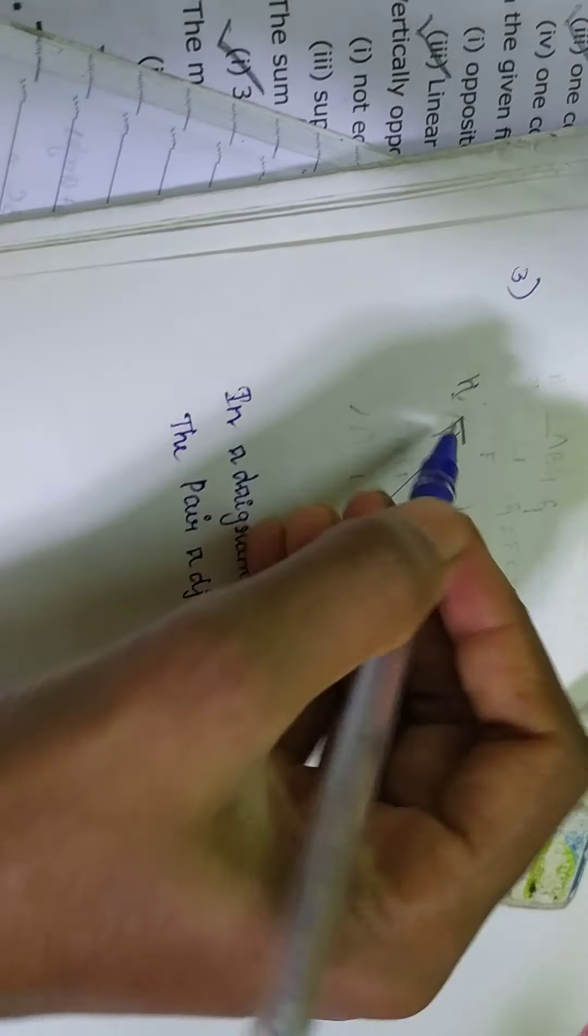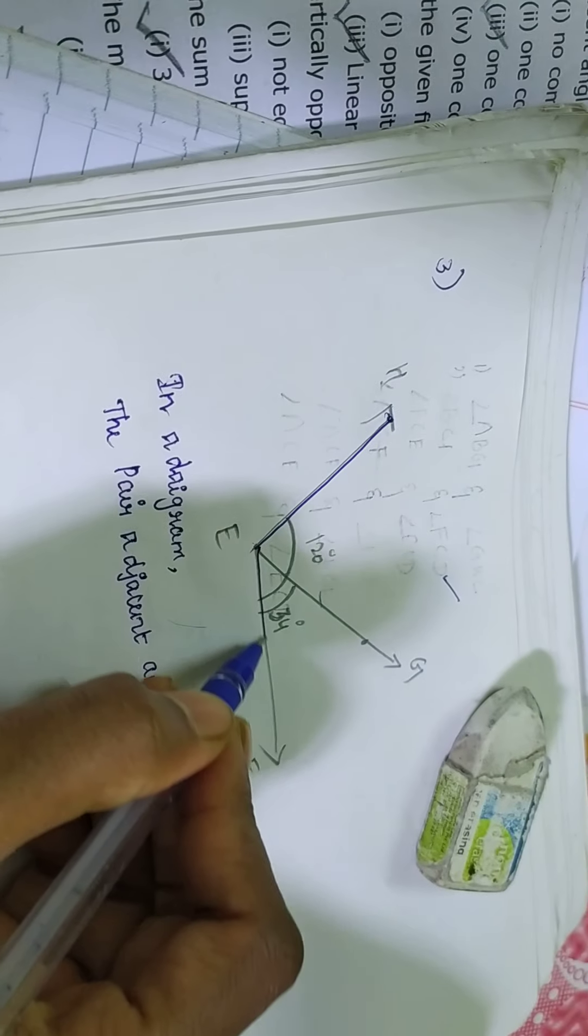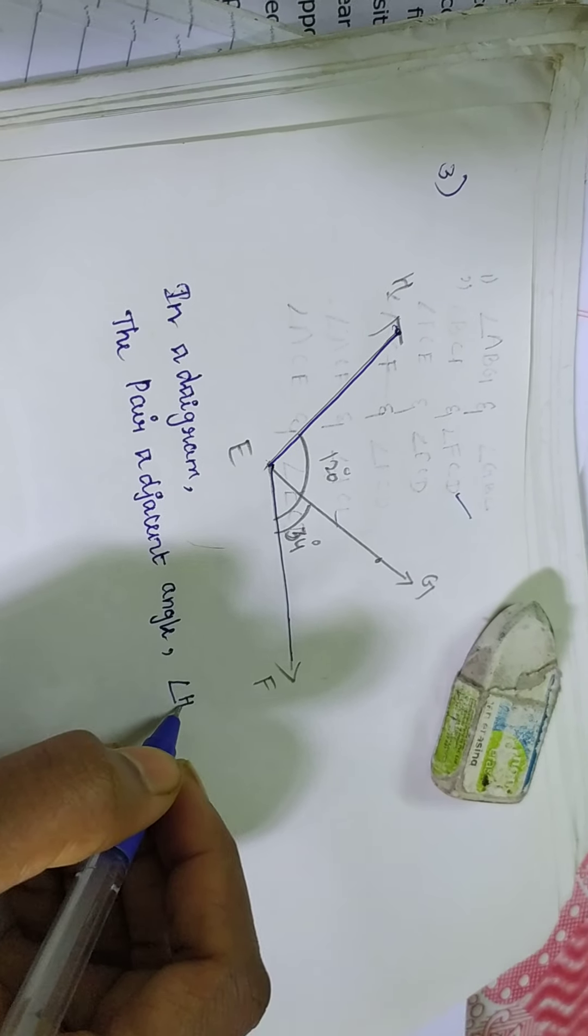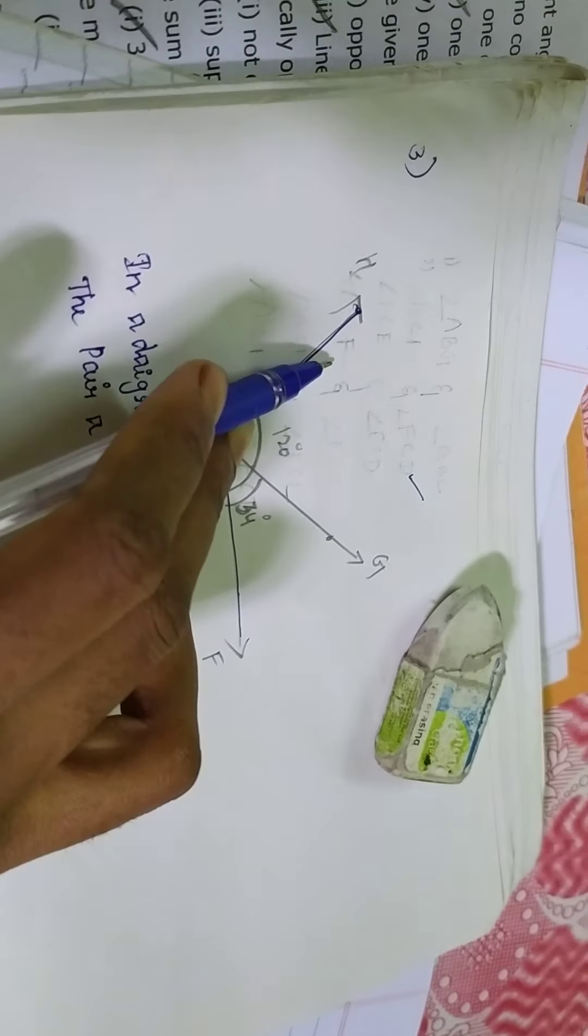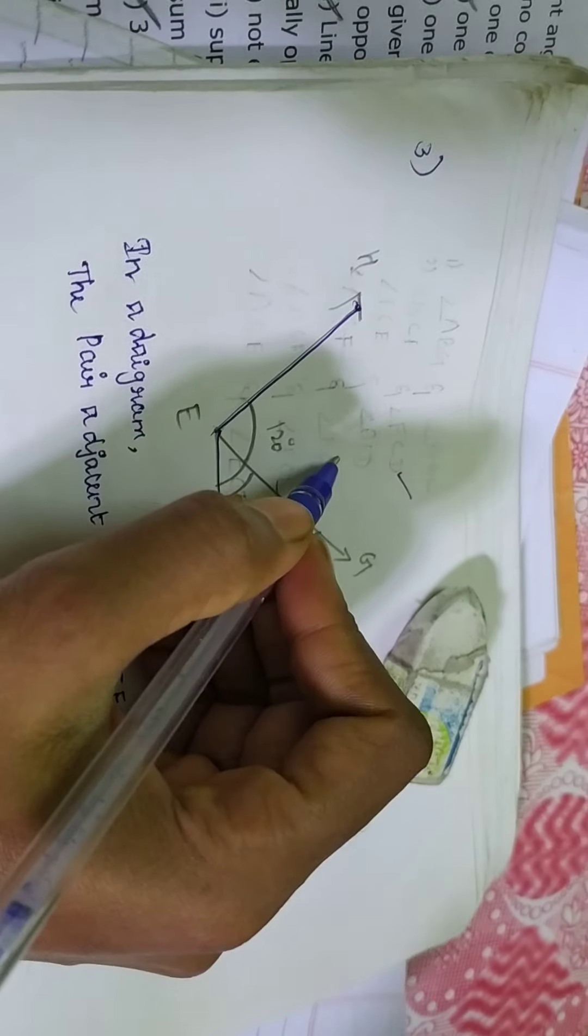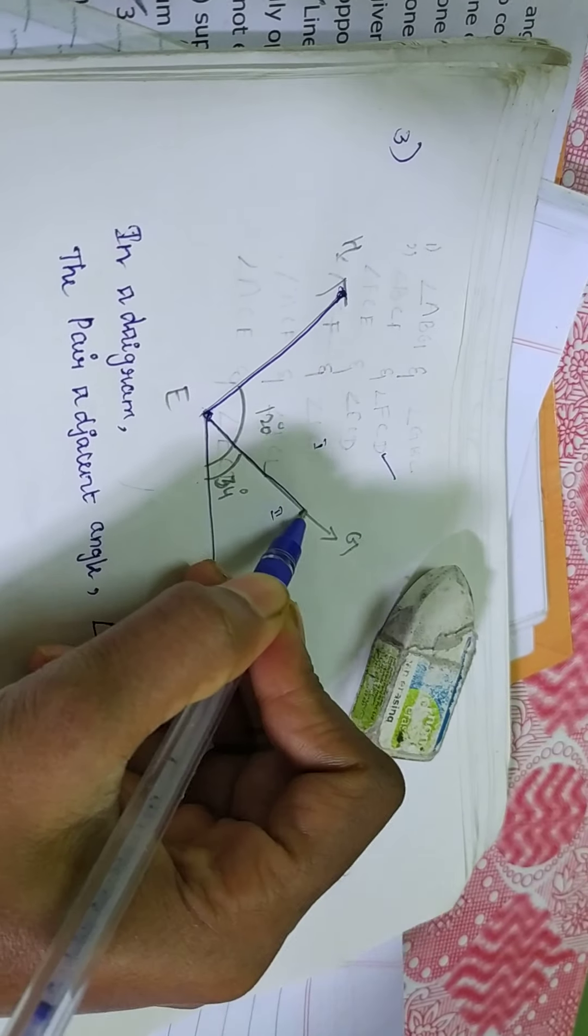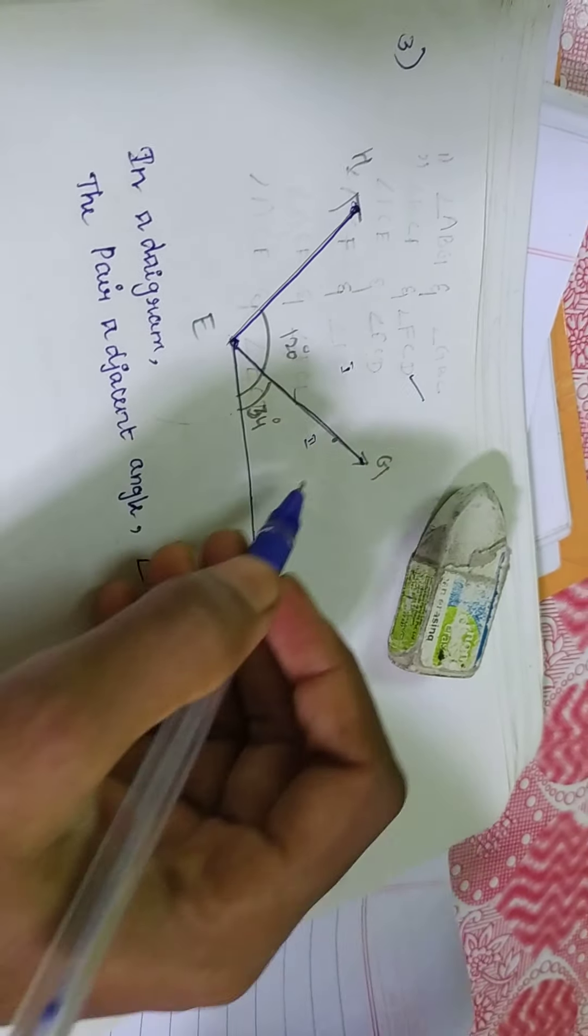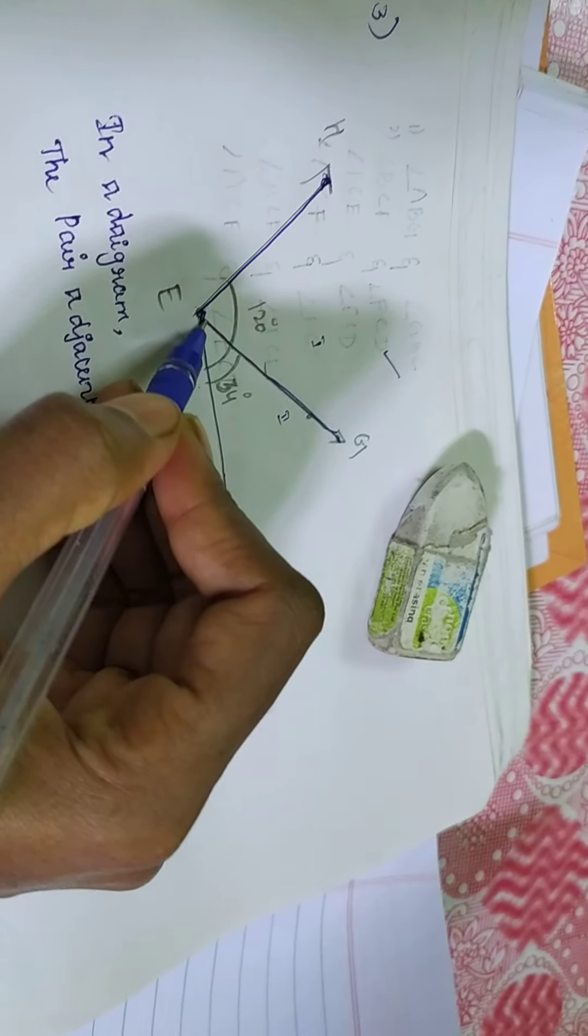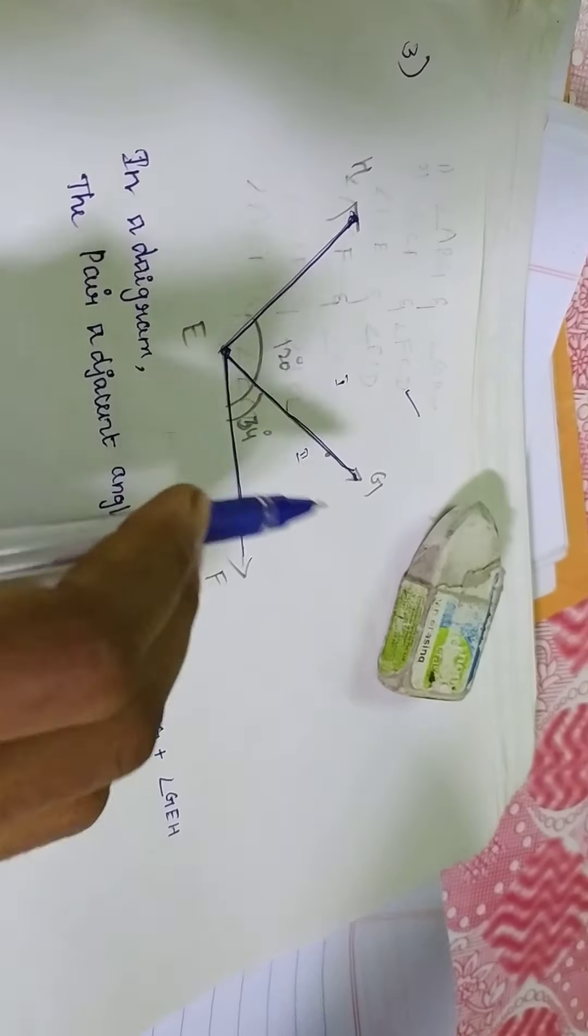So first of all, what is this? This angle H E F. Angle H E F is equal to. So this one is dividing into two parts, right? This is part one, this is part two. What is my part one? H E G. Angle H E G plus G E F. Okay, this is my one part, this is my second part.